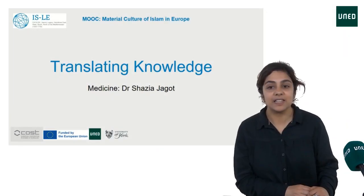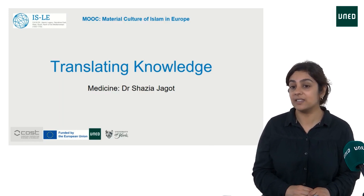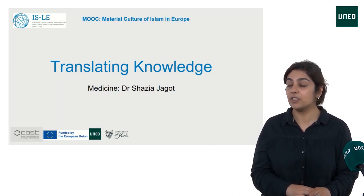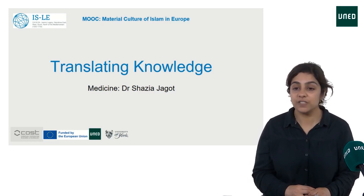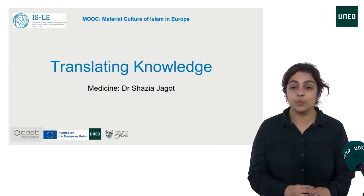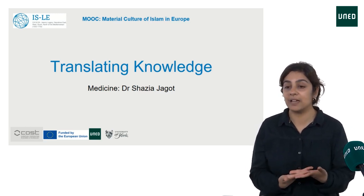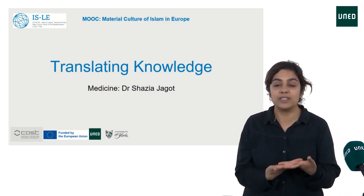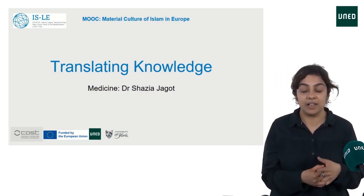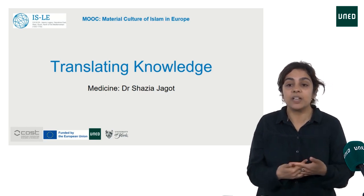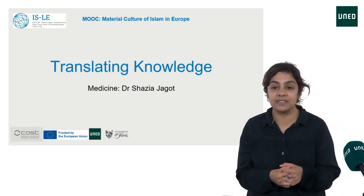The genre of the medical encyclopedia — a text that covered all illnesses that could afflict a person from head to toe — flourished in the Islamic world. The Persian physician Al-Razi composed a medical encyclopedia known as the Kitab Al-Hawi Fi Al-Tib, a comprehensive book of medicine, as did another scholar, Ali ibn al-Abbas al-Majusi, who wrote a complete book of the medical art, the Kitab Kamil al-Sina al-Tibya.